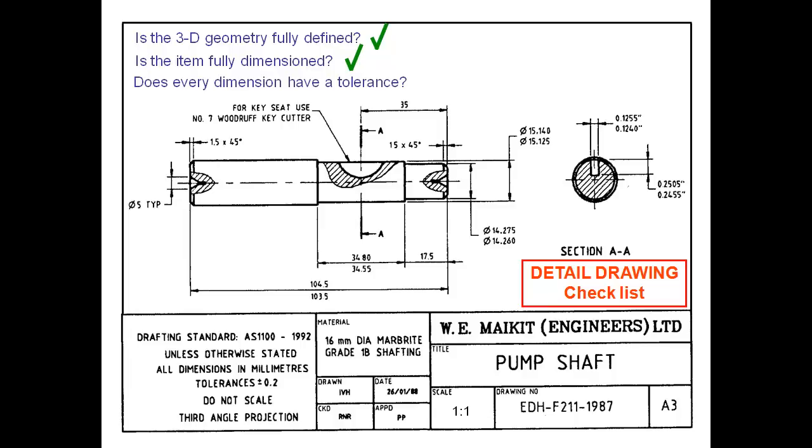The next step is to check does every dimension have a tolerance. So we have a catchall general tolerance down here which says that all the dimensions in millimetres are plus and minus 0.2 of a millimetre unless otherwise stated. And we can see on our drawing that we have several examples where we're actually given a tolerance using a different style of format. This is called a limit of size. So this tells us the upper and lower limits of the size.